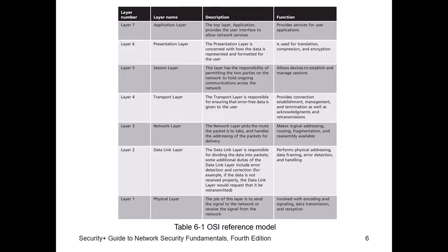The data link layer is when you're communicating with devices within the LAN — that's where the MAC address comes in. As you encapsulate data and put all the labels on it going down the line, you place the MAC address on the frames, and then the frames are placed on the physical layer — the wire — when they leave. We go into this in detail in our Cisco networking class.